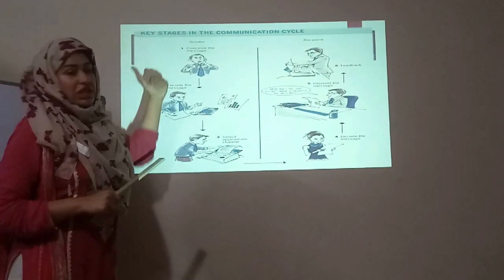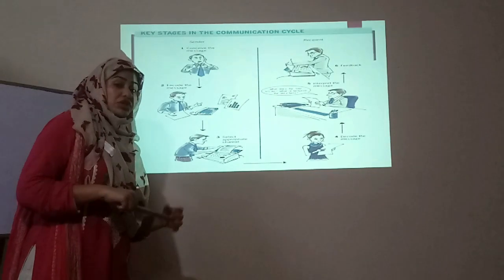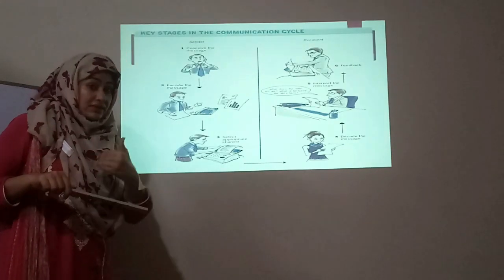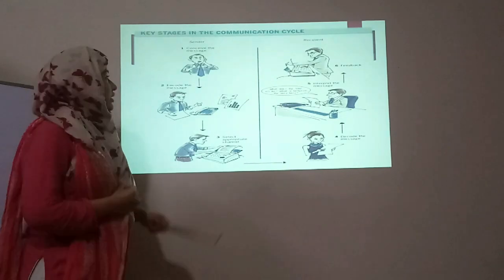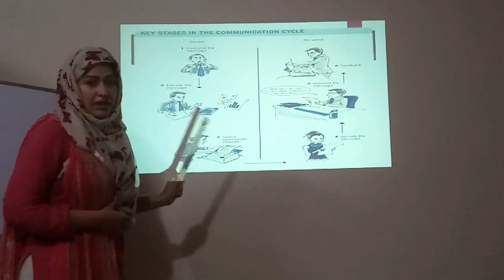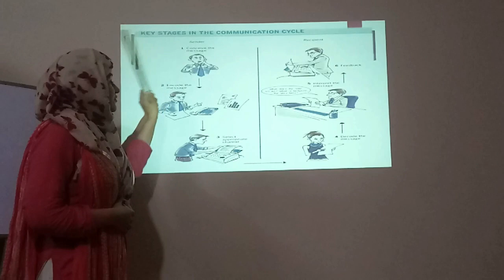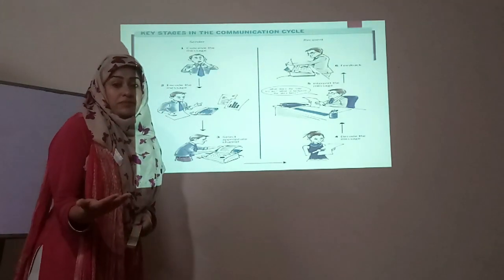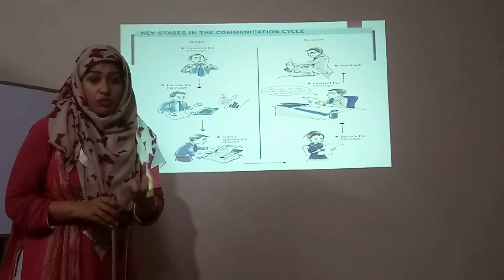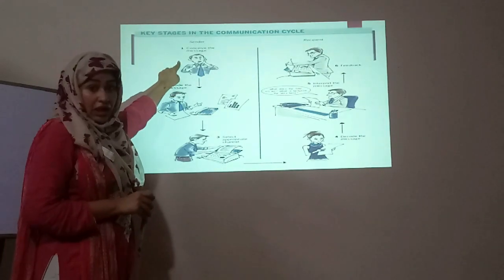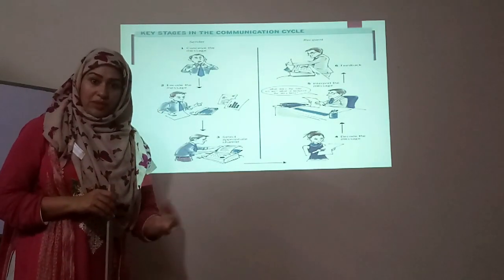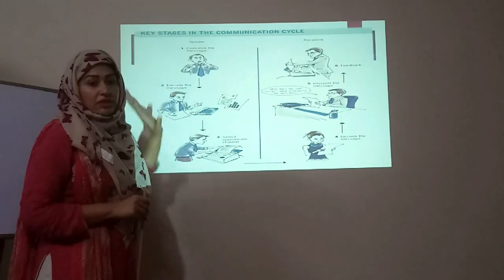Now comes the communication cycle. As mentioned earlier, communication is a two-way process — it cannot be one-way; if it's one-way, it's not communication. The cycle starts with a sender and a recipient. The sender's first task is to conceive the message: What do you have to say? To whom do you want to say it? Why do you want to say it? And what possible benefit do you want to earn from this communication? Answering these questions makes your communication clearer and more apt.